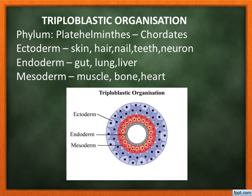Triploblastic organization means the embryo is covered with three germinal layers: ectoderm (outermost), endoderm (innermost), and mesoderm (middle). This is found from Platyhelminthes to Chordata. From ectoderm — skin, hair, nails, teeth, and neurons develop. From endoderm — digestive system, gut, lungs, and liver develop. From mesoderm — muscles, bone, and heart develop. This is called triploblastic organization.